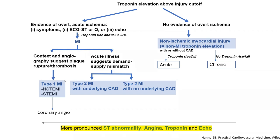In order to call myocardial infarction, you need to have a troponin elevation, but that's not enough. You need to have clinical evidence of acute ischemia, such as symptoms or EKG abnormalities — mainly dynamic ST elevation or depression, evolving Q waves, or deep T inversion over 5 millimeters — or wall motion abnormalities on echo. Plus, you need a troponin rise and fall of over 20% when rechecked at 2 to 3 hours.